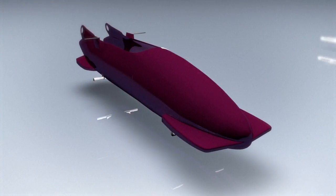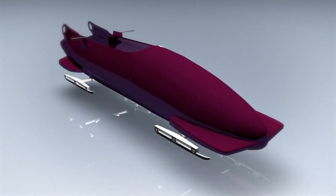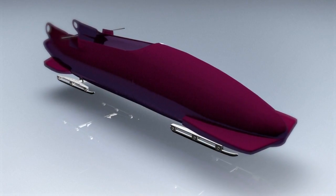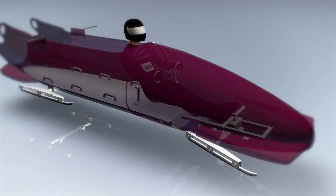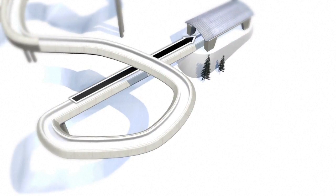The bob is a toboggan with an aerodynamic shell. It's equipped with two sets of independent steel runners. The pilot steers the front set with two handles. The brake is at the rear of the sled and is used after the bobsleigh has passed the finish line.